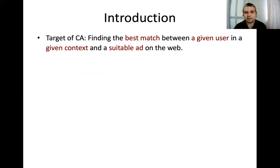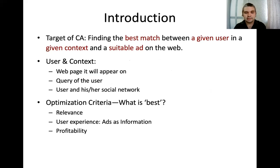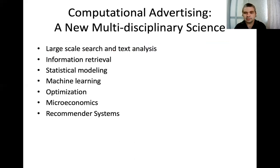What is the key problem of advertising? Basically, we want to find the best match between a user and a given context, and we want to show a suitable ad to the right people. The context of the user could be a page they appear on, a query in a search engine, or maybe their social network. It's always challenging to define what the best user match is. Parameters that come to mind include relevance, user experience, the informativeness of the ads, profitability for the advertising platform like Facebook, and also for the placement — the advertisement website.